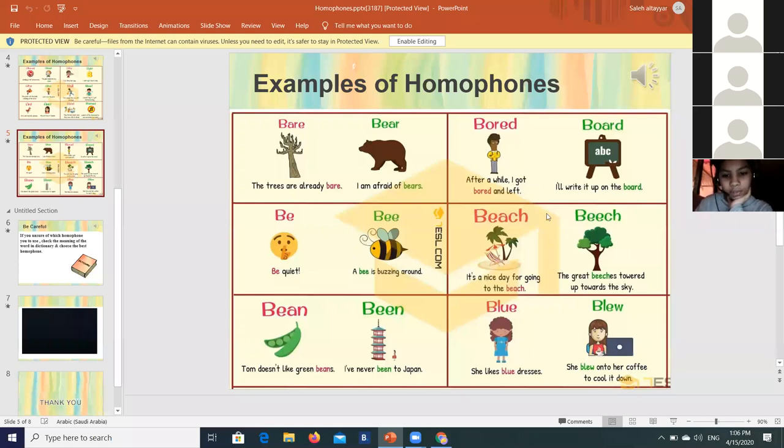'Beach' is a place next to the sea, spelled B-E-A-C-H. 'Beech' is a kind of fruit that we eat, B-E-E-C-H. And 'bean', B-E-A-N, is a type of vegetable that we eat.